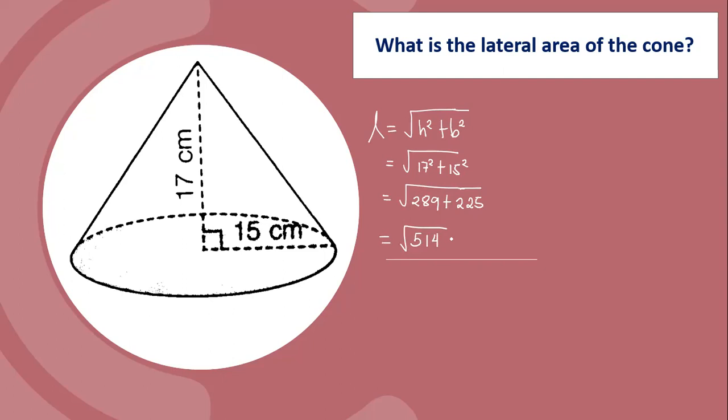Square root of 514 centimeters is the slant height, or in decimal 22.67 centimeters. And then compute the lateral area.